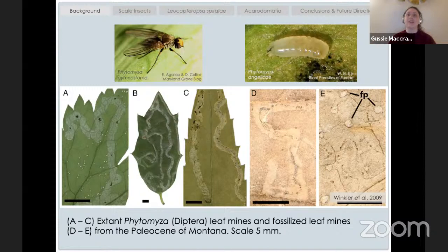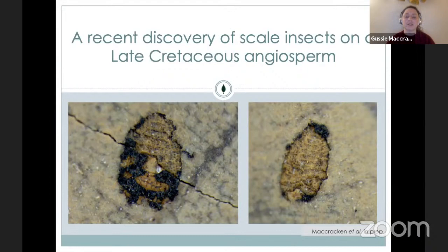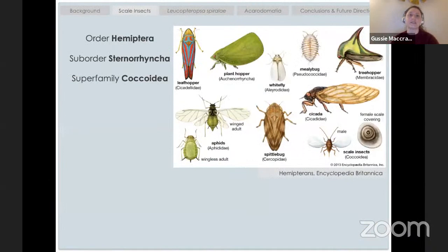Now I'm going to go into some of my most recent discoveries — natural history tales that I think are kind of fun. I'll start with one that is very much in progress: late Cretaceous scale insects. They're really rare in the fossil record, and really interesting because we can actually see their bodies and see what they were eating. Scale insects are Hemipterans — true bugs — in the suborder Sternorrhyncha and superfamily Coccoidea. Here you can see some of the different groups of Hemipterans. The scale insects, at the very bottom right, look wildly different from their Hemipteran counterparts.